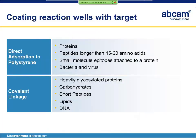When binding sample or target to the well, it's important to consider the type of molecule. Typically, large proteins or antibodies are bound to a well, and these types of molecules will absorb to the polystyrene well and retain their ability to be detected by the antibody. Other types of molecules, such as heavily glycosylated proteins, carbohydrates, short peptides, lipids, and DNA, will need to be modified by the addition of a covalently linked affinity reagent, such as biotin or a carrier protein, before being bound to the well to retain immunogenicity.